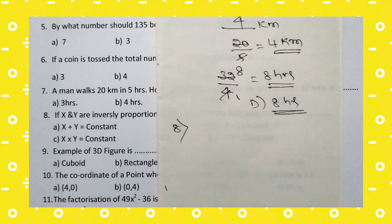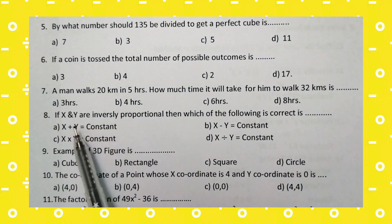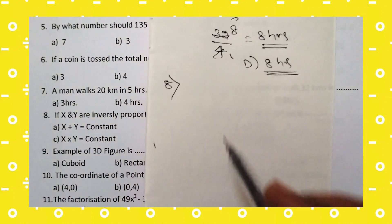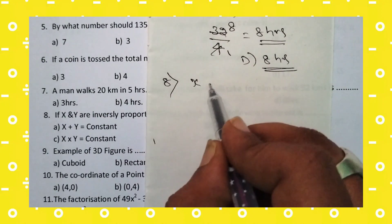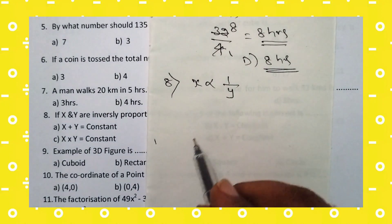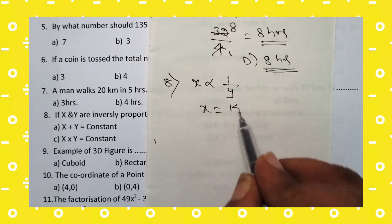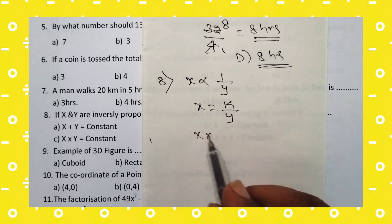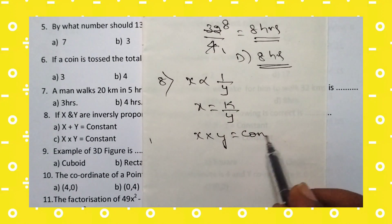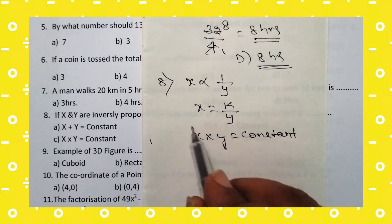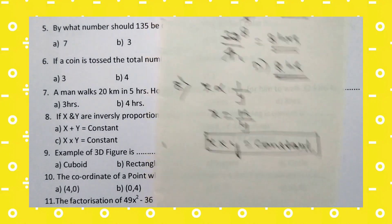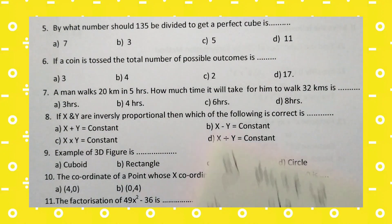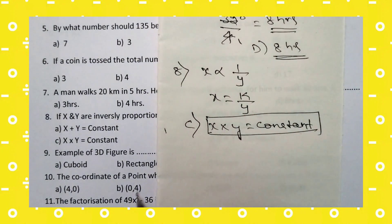Eighth question: if x and y are inversely proportional, which of the following is correct? If x is inversely proportional to y, then x equals a constant k divided by y. Multiplying both sides by y gives x into y equals constant. So option C — x into y equals constant — is the right answer for the 8th question.